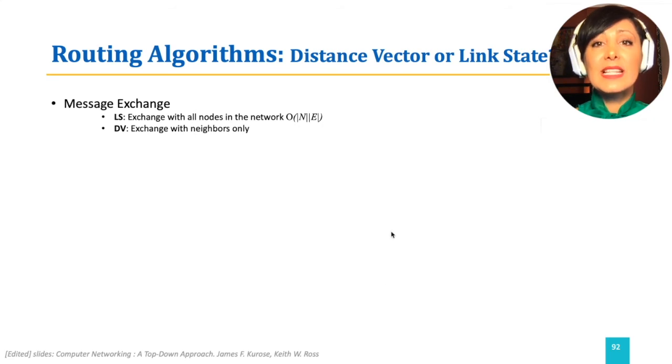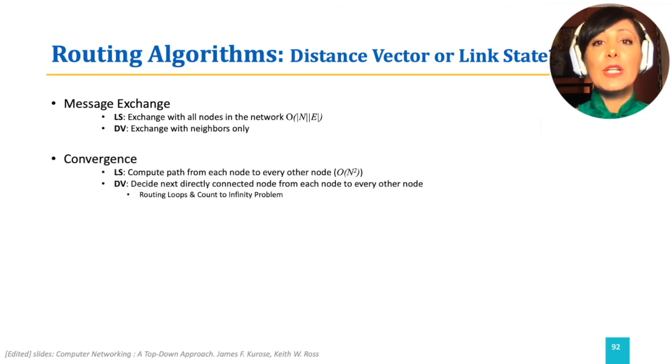The link state needs to compute paths from each node to every other node in the network. So, it converges in n to the power of 2 in the loop we saw. Distance vector may encounter problems like routing loops and count to infinity, affecting the convergence boundaries for these cases substantially.